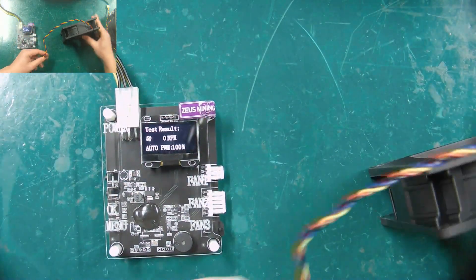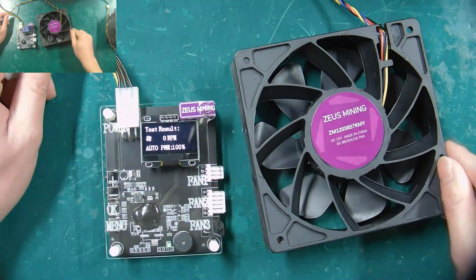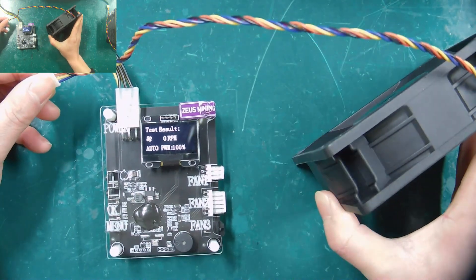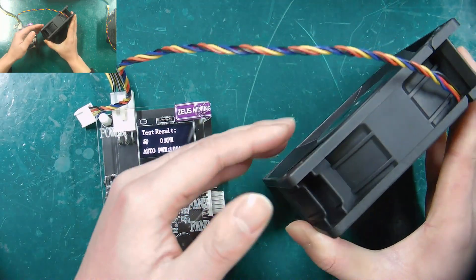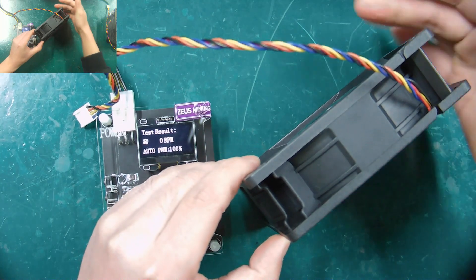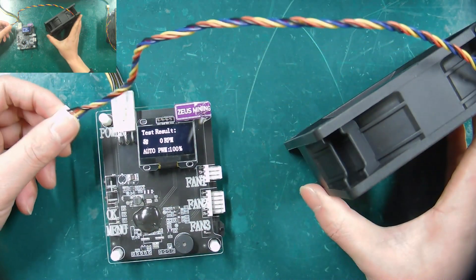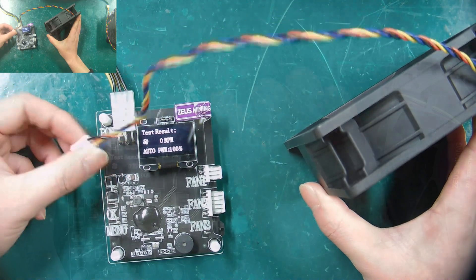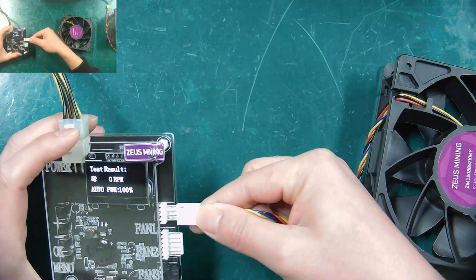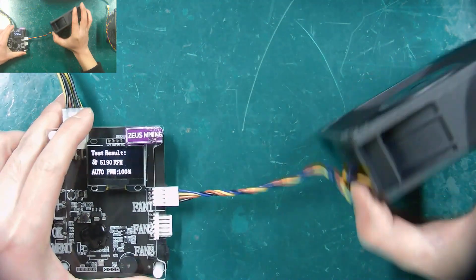When testing the fan, it cannot be placed flat. We need to ensure that the fan is vertically placed, and then the front and rear airflow of the fan can operate normally during operation. To ensure more accurate test results, connect the fan interface and place the fan vertically.